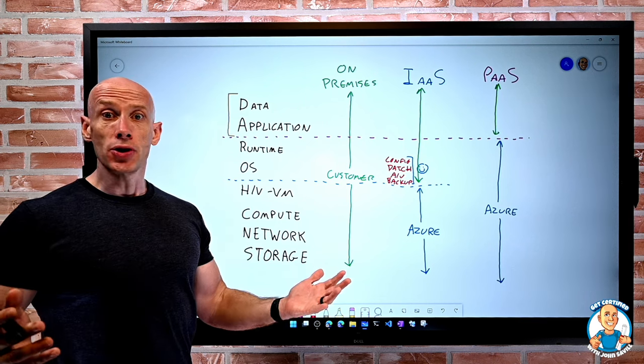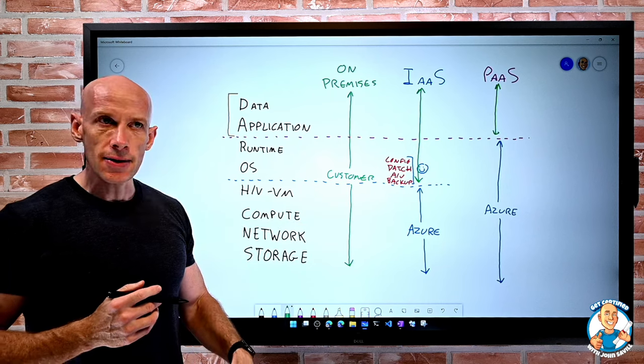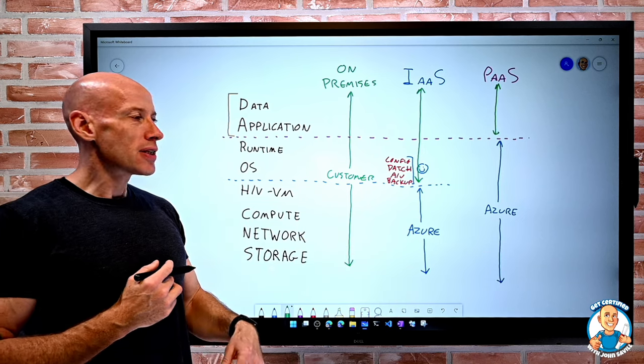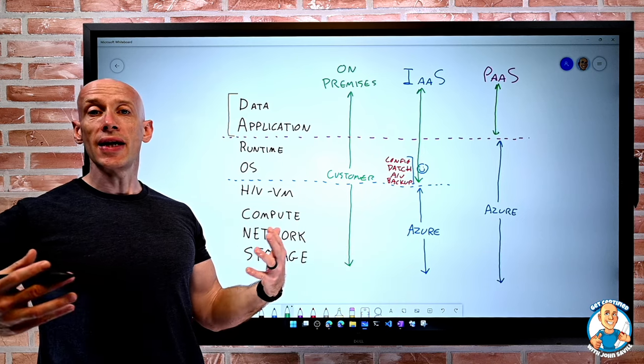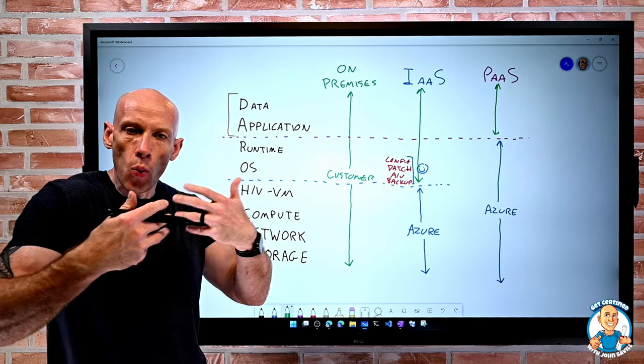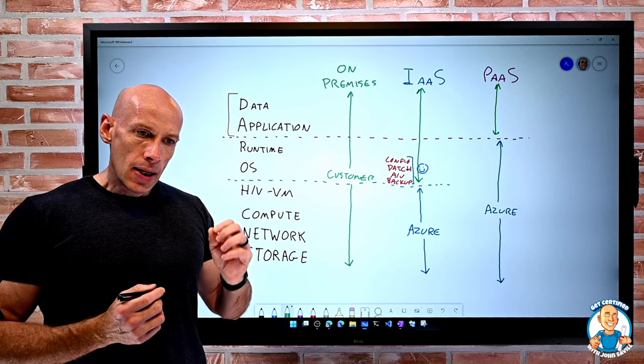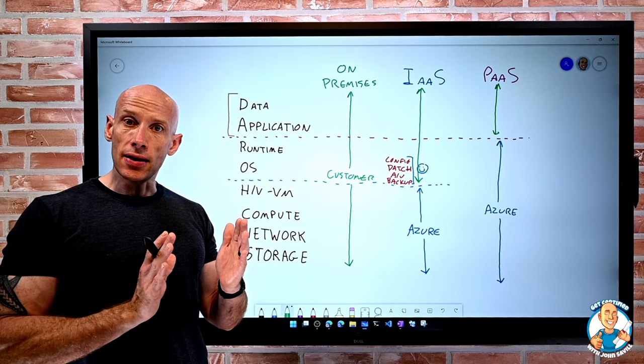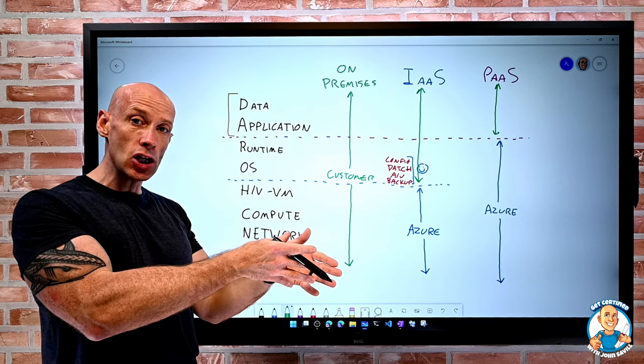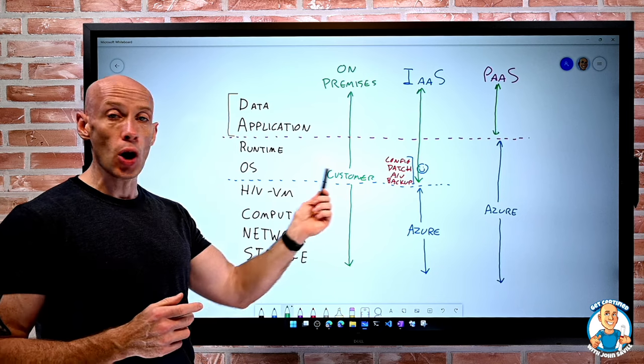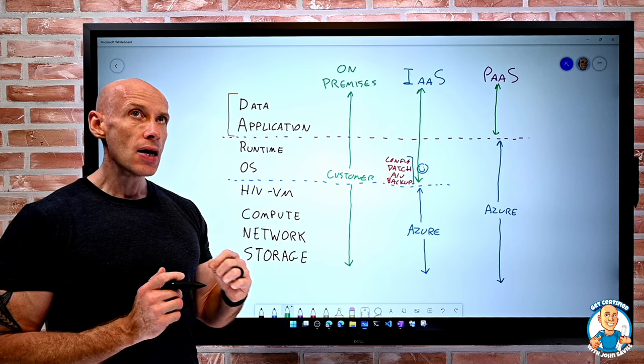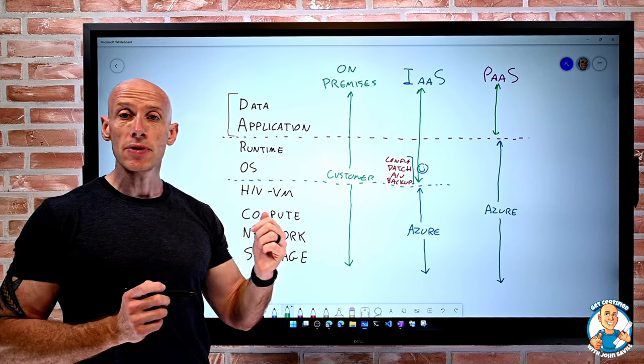There are still operating systems there. There are still runtimes there. There might be middleware systems there. I am laser focused on my app, on my data, what delivers the value to my company. Now there's a lot of different options in Azure. There's different types of PaaS services. And that's why I talked about these kind of shades that we get in here.